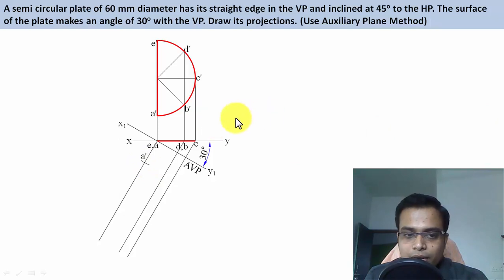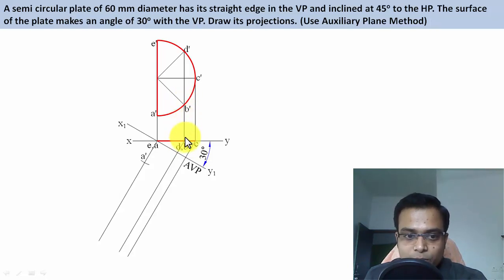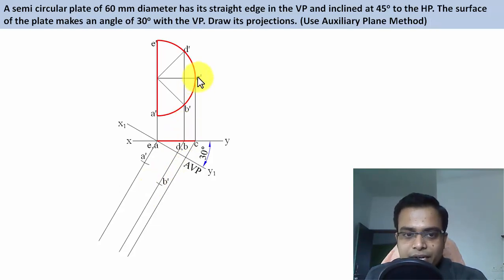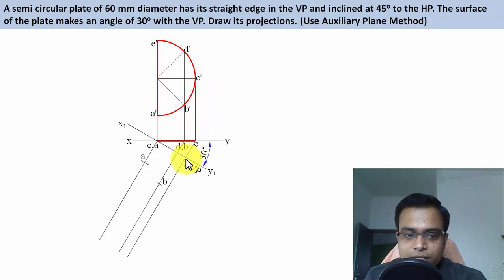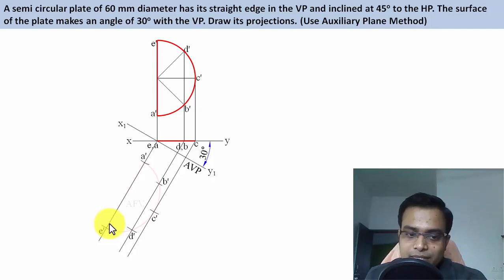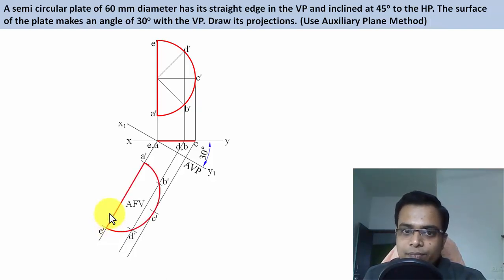For point B', keep one leg of your compass at the reference, the other leg at B', use that distance as the radius, and with x1y1 as the center cut an arc — that's point B'. For point C', keep one leg here, other leg there, and with that distance as the radius cut an arc — that's point C'. Similarly, work out the remaining points, and you get a squeezed-up semicircle. The surface inclination step is now complete.